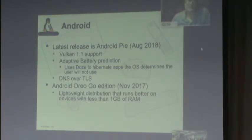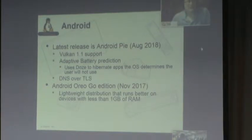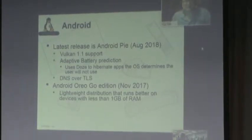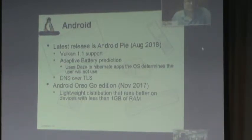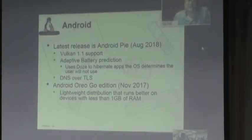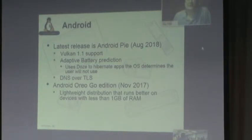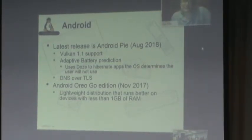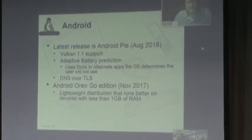Android Pie also has some security features. One of the important ones is DNS over TLS — TLS stands for Transport Layer Security, the encryption for network requests. In order to make DNS lookups more secure, they're encrypting them. That's actually a good thing; it'll keep mobile phone users from getting to man-in-the-middle sites, hacked sites, DNS redirection, and that type of thing.